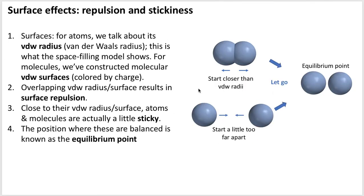The next topic is surface effects, and here we talk about repulsion and stickiness. For atoms, we often talk about what's called the van der Waals radius — in Spartan, that's what the space-filling model shows, which is just the radius of one of these argon atoms. For molecules, we've already constructed molecular van der Waals surfaces, which when colored with charge are called electrostatic potential maps, but the surface itself is called the van der Waals surface.